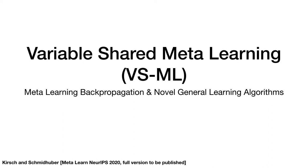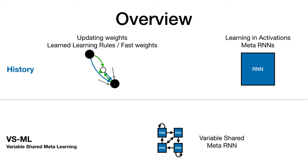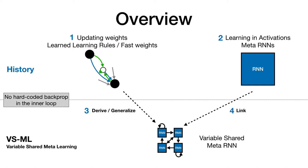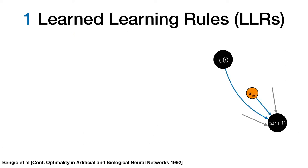Variable shared meta-learning is the next topic of this talk. VSML for short. This new framework allows for meta-learning backpropagation and novel general learning algorithms. To be able to understand variable shared meta-learning, we have to first take a look at the history of meta-learning. Crucially, all the approaches I will showcase do not require hard-coded backpropagation in the inner loop. The first category we look into is about learned learning rules and fast weights, and the second one about learning inactivations, the meta RNNs. We will then generalize fast weights to derive the variable shared meta RNN. Further, we link it to the meta RNN. And finally, we show how variable shared meta RNNs can implement backpropagation purely in the recurrent dynamics and learn novel general learning algorithms from scratch.